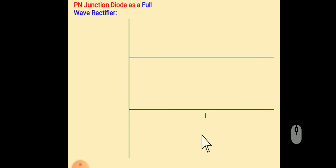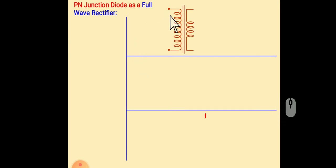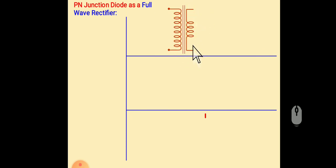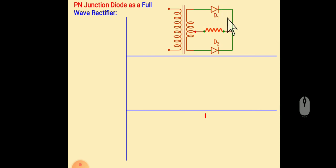Then we will discuss about full-wave rectifier. Same in full-wave rectifier also — we need a transformer which has both primary and secondary terminals, and in the middle section there is an iron core. But here, there are two diodes, and we need a center-tapped transformer.